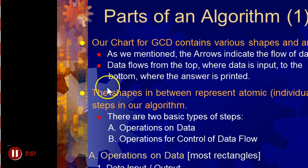There are two basic types of steps: operations on data, and operations for control of data flow. Operations on data, most rectangles. So input AB, do this kind of thing. This is like what, B times A, or is that B minus A, can't even read it, goes to B.